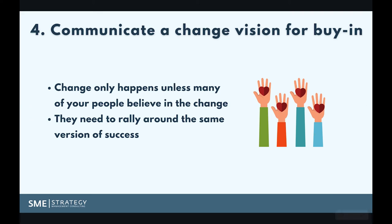Number four: once you have that clear vision, you need to communicate the change vision for buy-in. People won't buy into something if they don't see how it applies to themselves or why they should care. The key part is getting alignment and buy-in for this new vision — what's in it for them, what's in it for you — and they need to see that future as being worthwhile enough to go through the change. If they don't buy in, you've got nothing. They might give you a head nod, but if they're not bought in, they're not going to keep going when it gets tough.